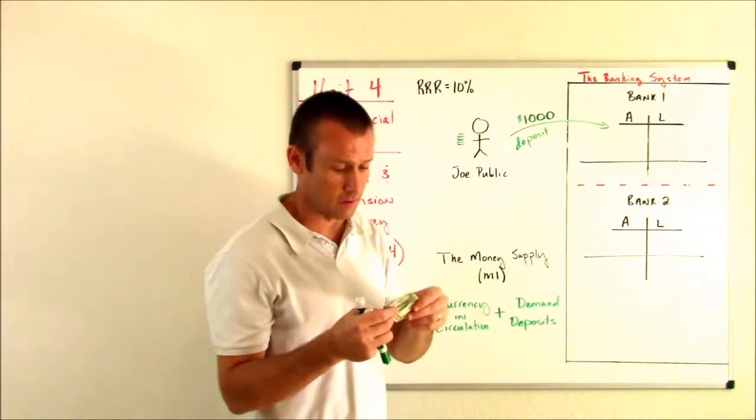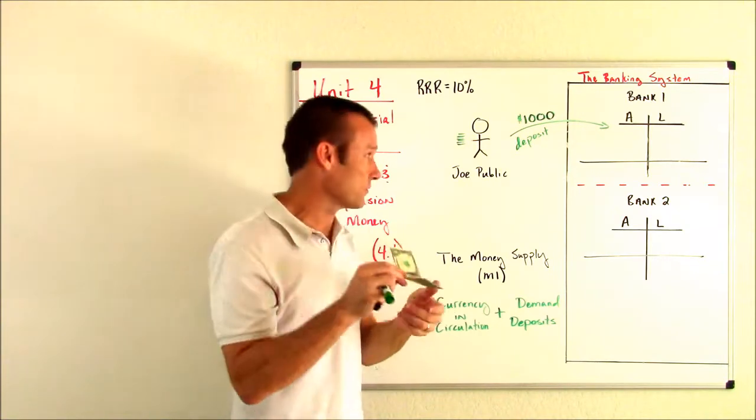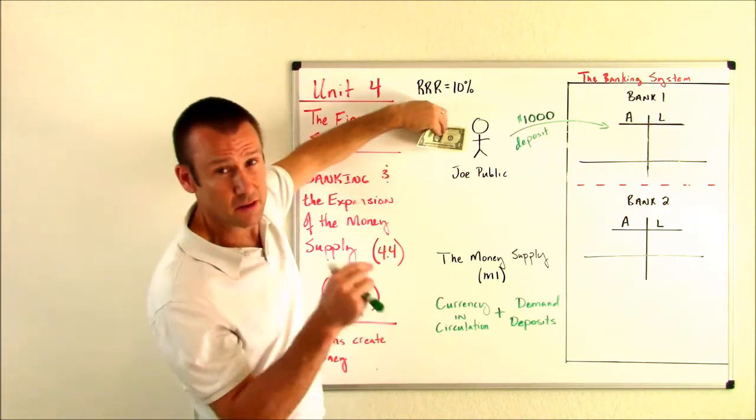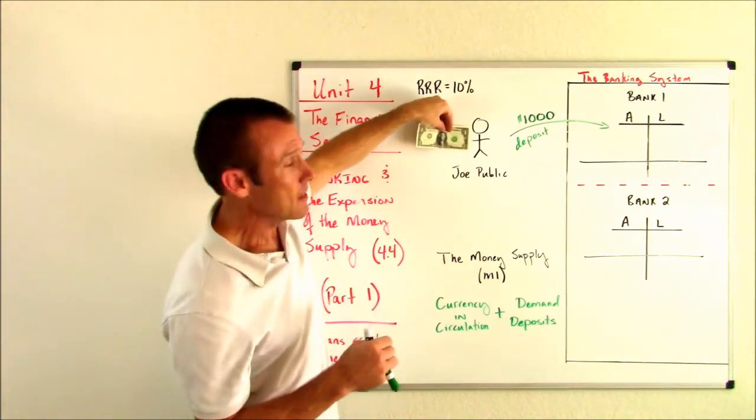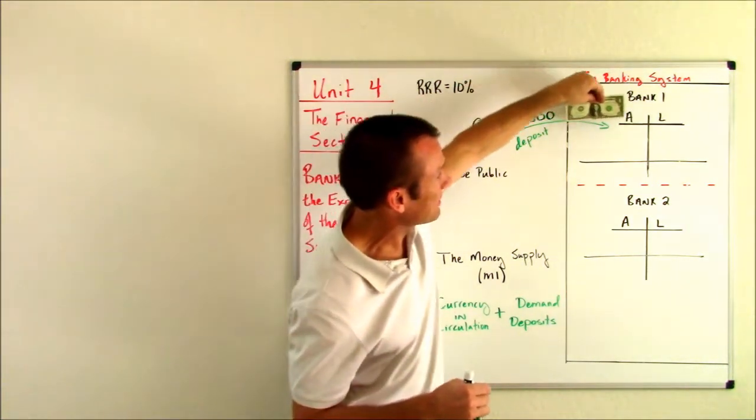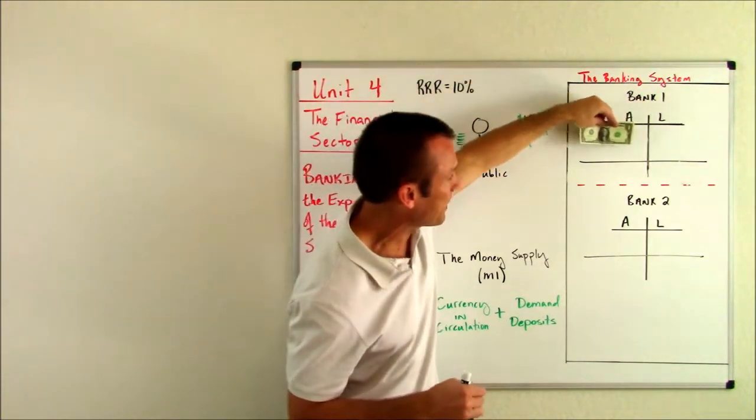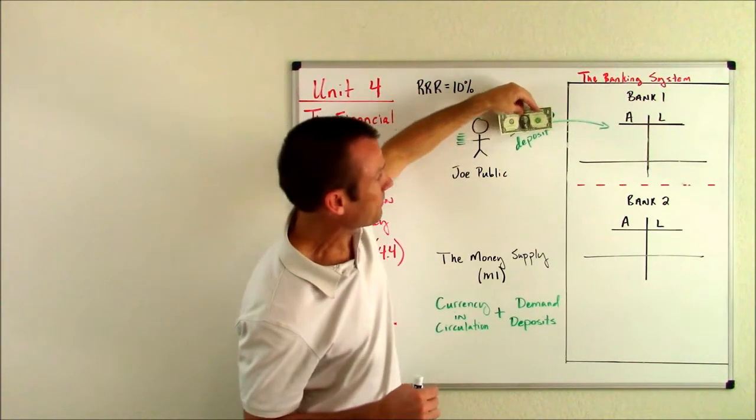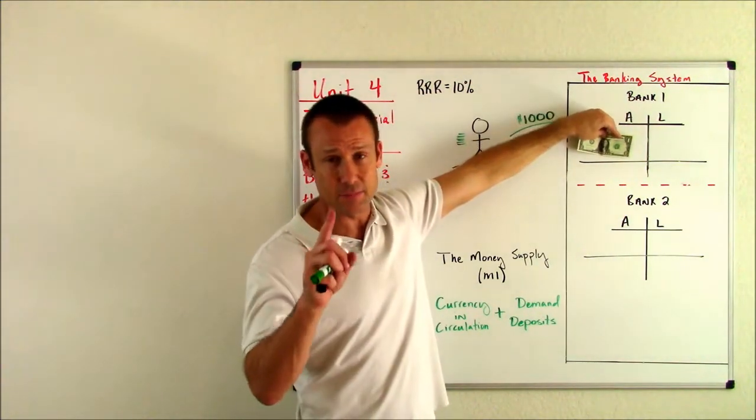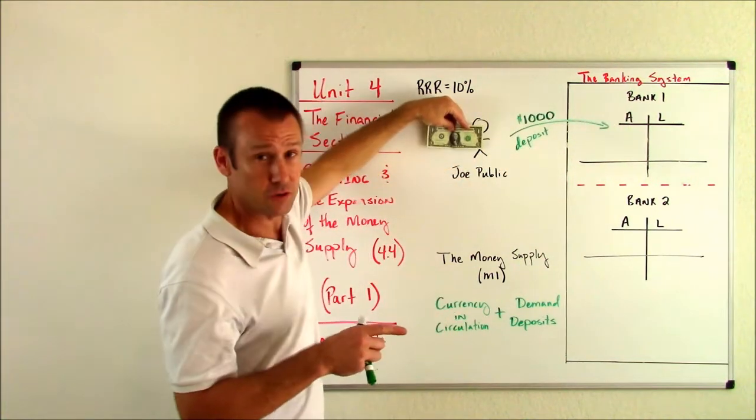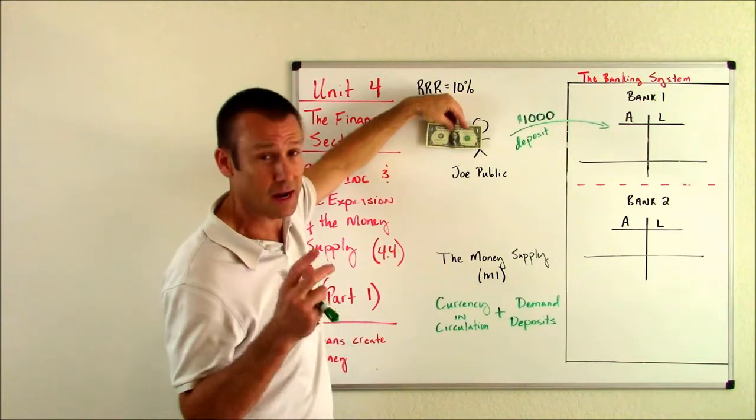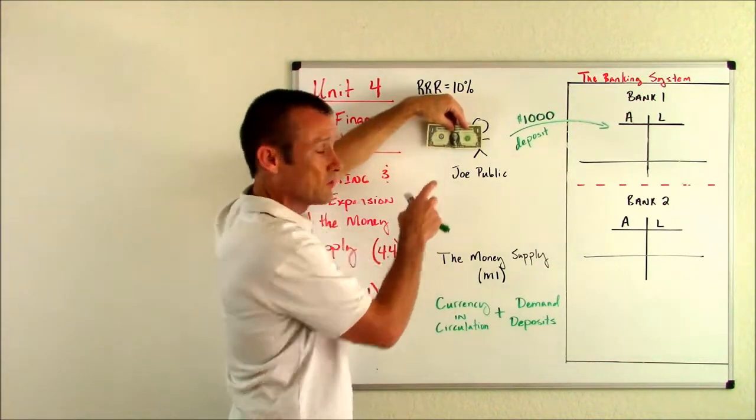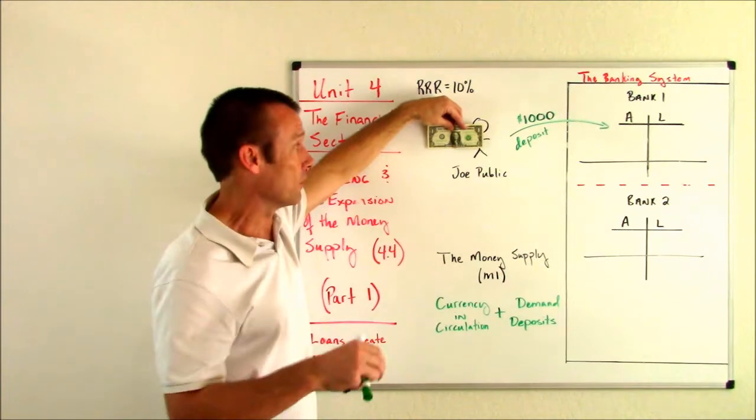Again, Joe makes the deposit of $1,000. I also have to clarify something else as we do this. So I've got this little $1 right here. Imagine I've got 1,000 of these. 1,000 of these in Joe's hand are absolutely part of the money supply. However, when he makes a deposit and puts these into a bank, when these pieces of paper go into a bank, they cease to be money.